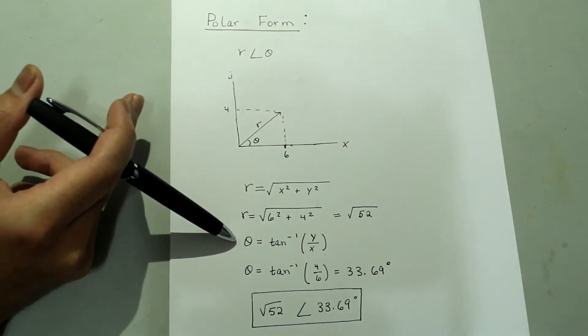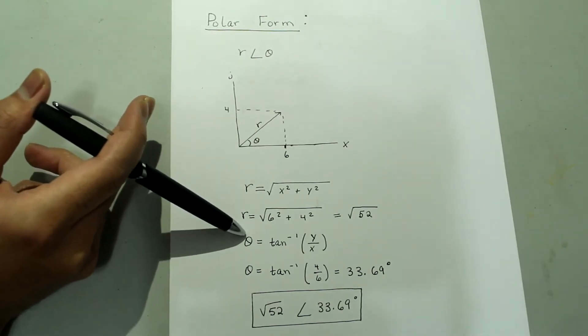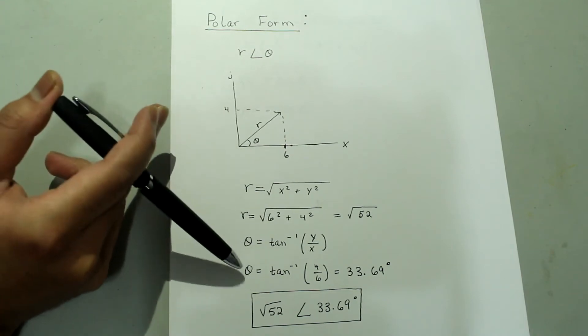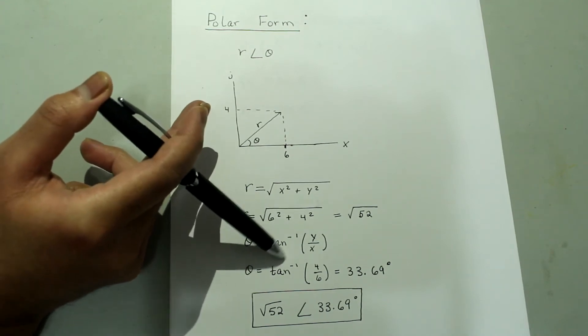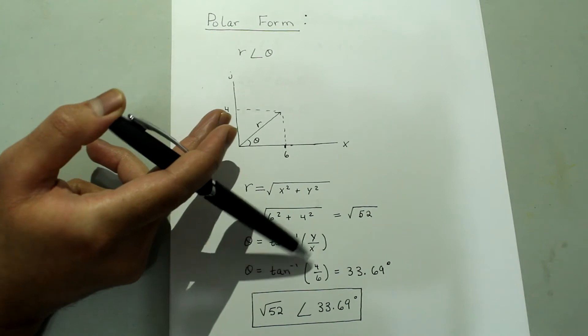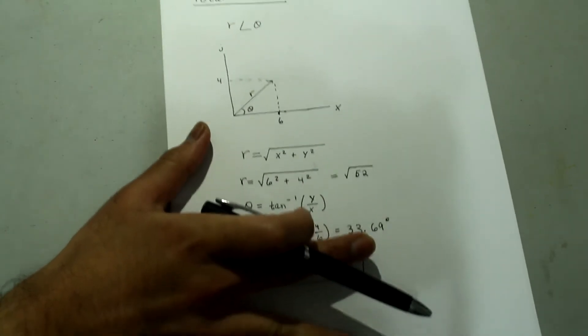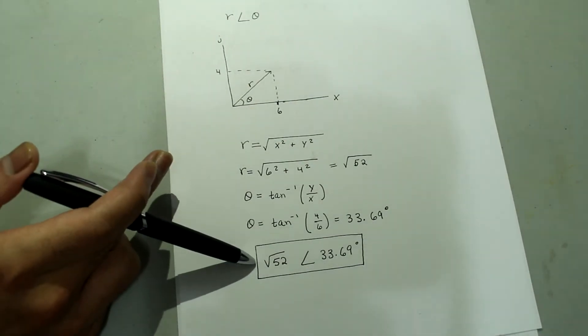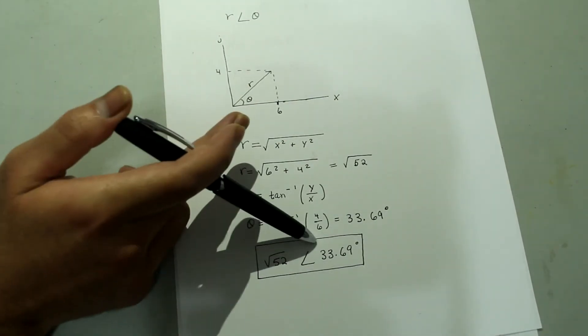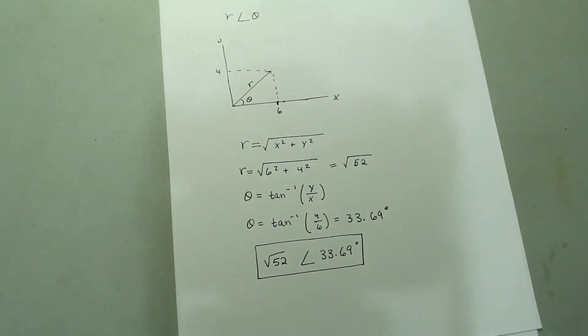And theta is just arctan y over x. So that's theta equals arctan 4 over 6, which equals just about 33.69 degrees. So if you were to write it in polar form, it would be square root of 52, and then the angle 33.69 degrees.